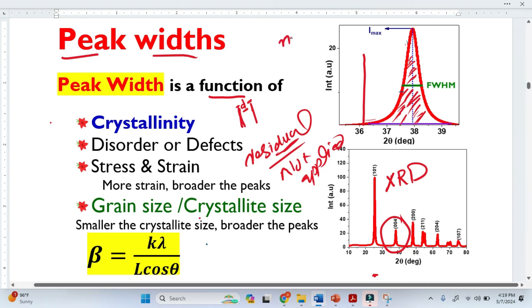Because if we go to nanometer, nanomaterial size, less than 10 nanometers, less than 15 nanometers, the peaks get very broad. If we have micron-size particles, the peak width will decrease.